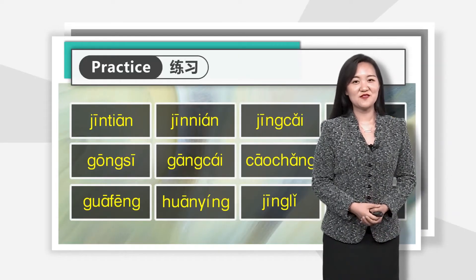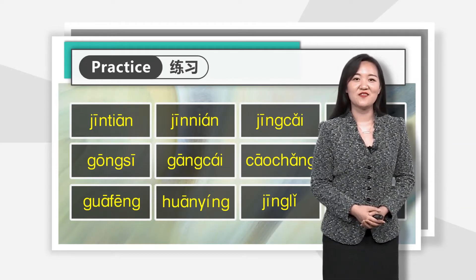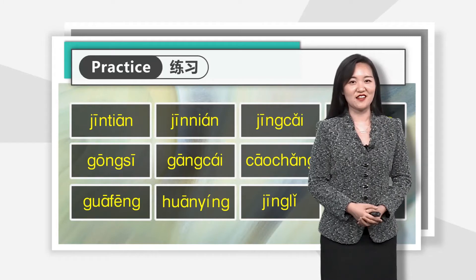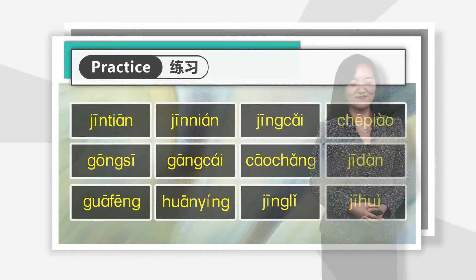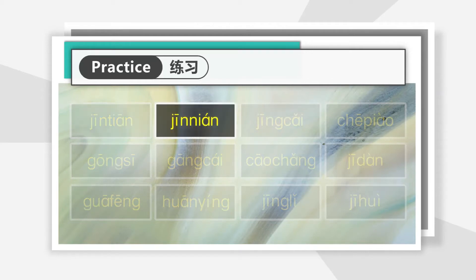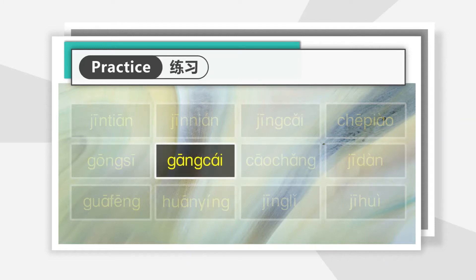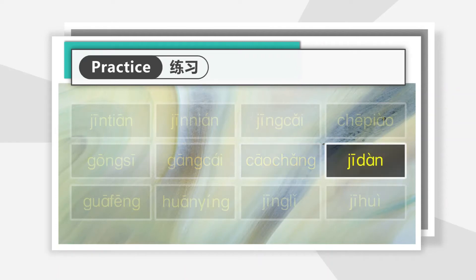Let's do some practice. Listen and read after me and pay attention to the collocation of the tones: 今天, 今年, 精彩, 车票, 公司, 刚才, 操场, 鸡蛋.